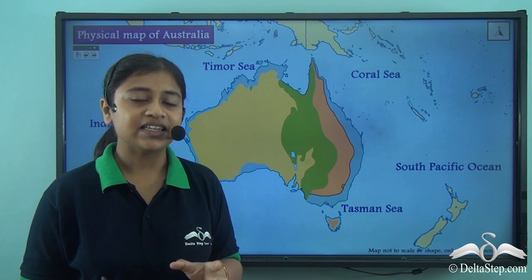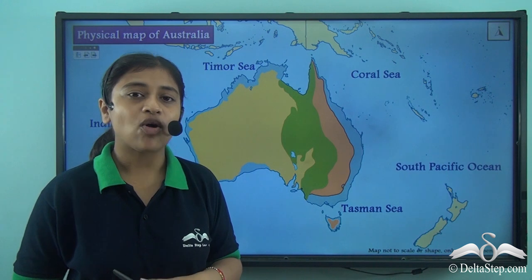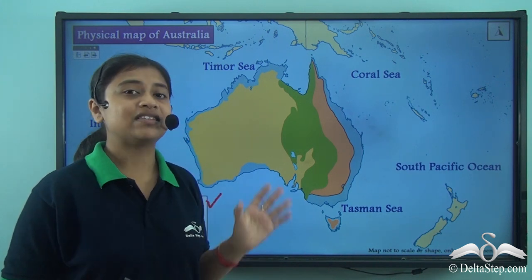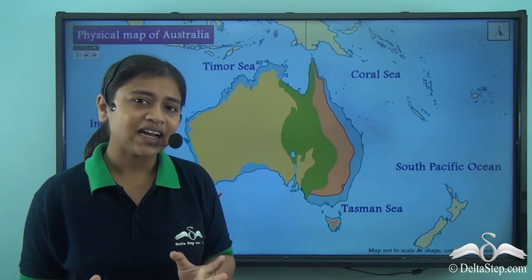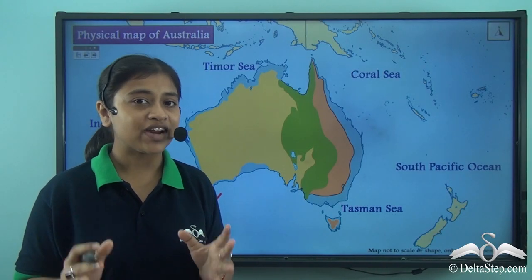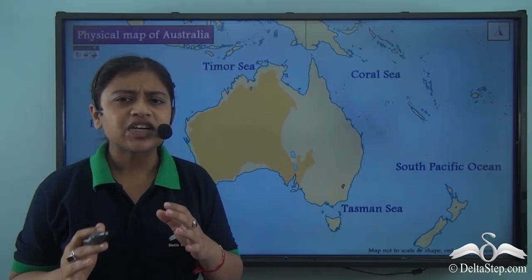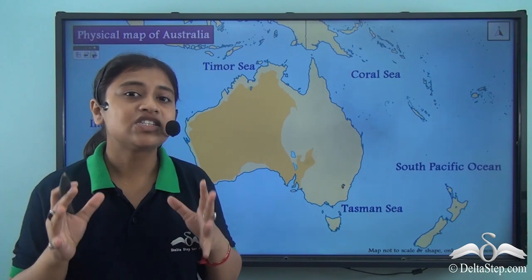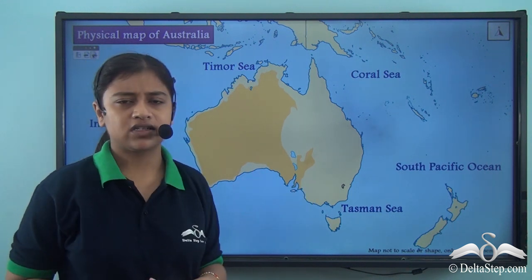In this lesson we'll put our focus on the first physical division which dominates almost two-thirds of the continent — the Great Western Plateau. The Great Western Plateau is unique because it dominates the climate and vegetation of the continent.